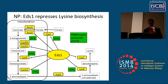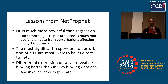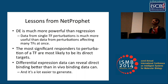We were able to draw some lessons from NETPROFIT that may apply beyond the specific algorithm. Differential expression is much more powerful for identifying direct targets than regression is. As a corollary, data from single transcription factor perturbations is much more useful than data from environmental perturbations that affect many transcription factors at once. The most significant responders to perturbation of a transcription factor are most likely to be its direct targets. And differential expression data can reveal direct binding better than in vivo binding data can — and it's a lot easier to generate.